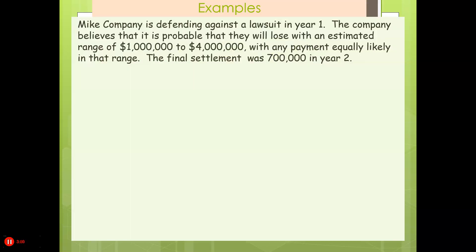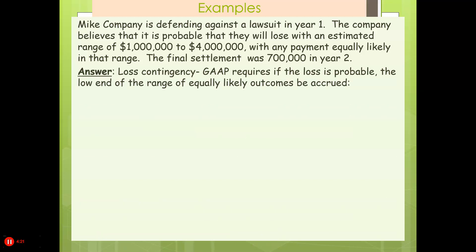Let's take a look at an example. My company is defending against a lawsuit in year one. The company believes it's probable they will lose, with an estimated range of $1 million to $4 million, with any payment equally likely in that range. The final settlement was $700,000 in year two. GAAP requires that when the loss is probable, the low end of the range of equally likely outcomes be accrued — so under GAAP, we would accrue the $1 million. Under the international standard, you would accrue the midpoint, which would be $2 million.